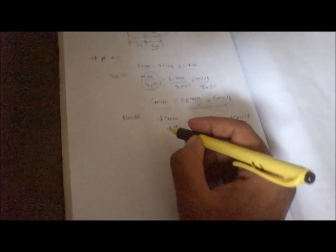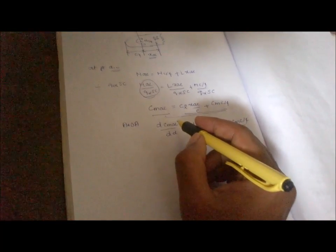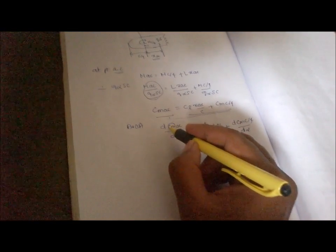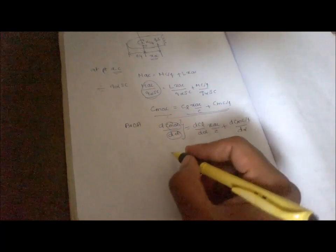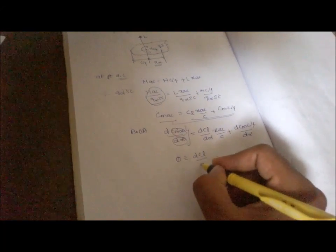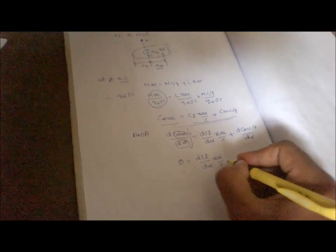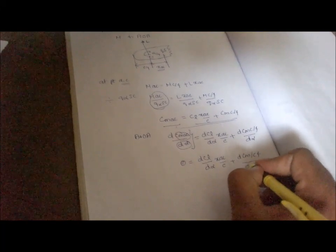By the definition of aerodynamic center, moment is independent of angle of attack. So this term can be written as 0 is equal to dC_L by d alpha times X_AC by C plus dC_M_C/4 by d alpha.